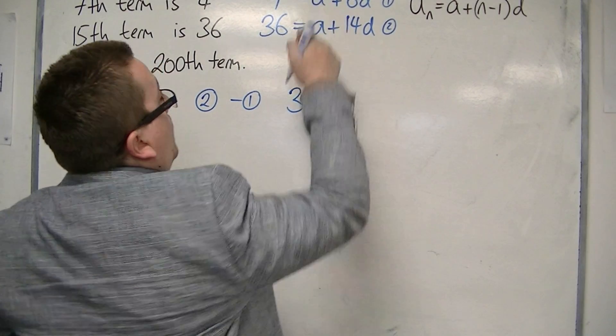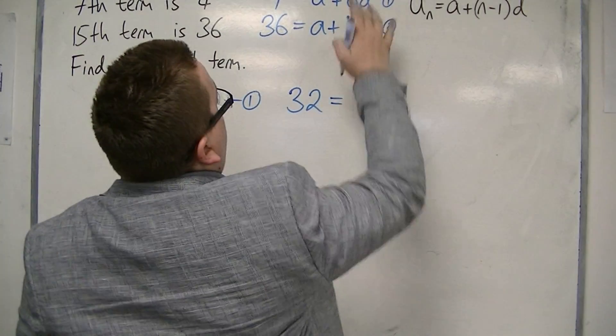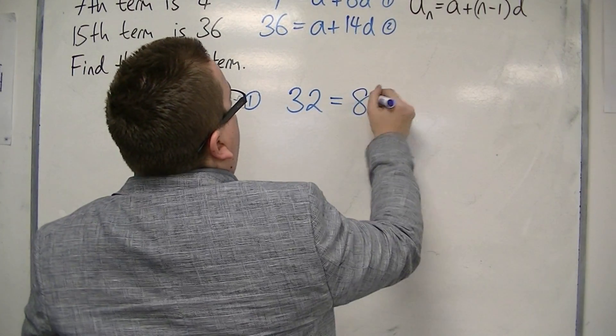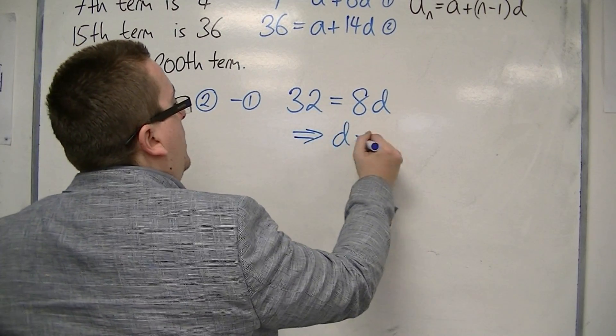I've got A take away A, so the A's cancel. And I've got 14D take away 6D, that's 8D. So D must be 4.